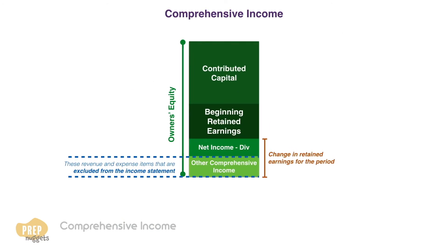If we take the net income minus the dividend payouts plus other comprehensive income, we should have the total comprehensive income that accounts for the change in retained earnings for the period.